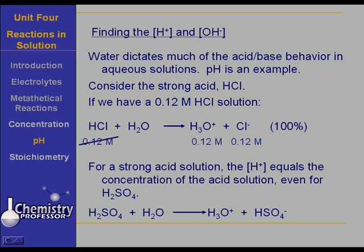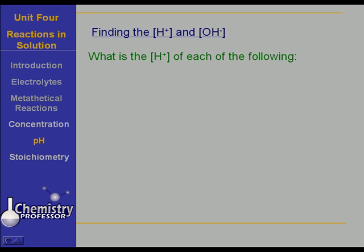Sulfuric acid reacts with water to produce a hydronium ion and a bisulfate ion. This bisulfate ion is a weak acid and its dissociation is very small, particularly when compared to the fact that the sulfuric acid dissociates 100% to give you that hydrogen ion and the bisulfate ion.